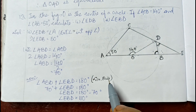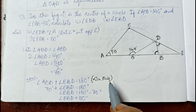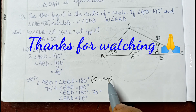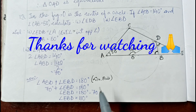This is the last sum from this exercise and chapter. In my next video I am going to cover sums of chapter 4, pair of linear equations in two variables, from the class 9 textbook. Till then, bye bye, take care and wait for the next part.